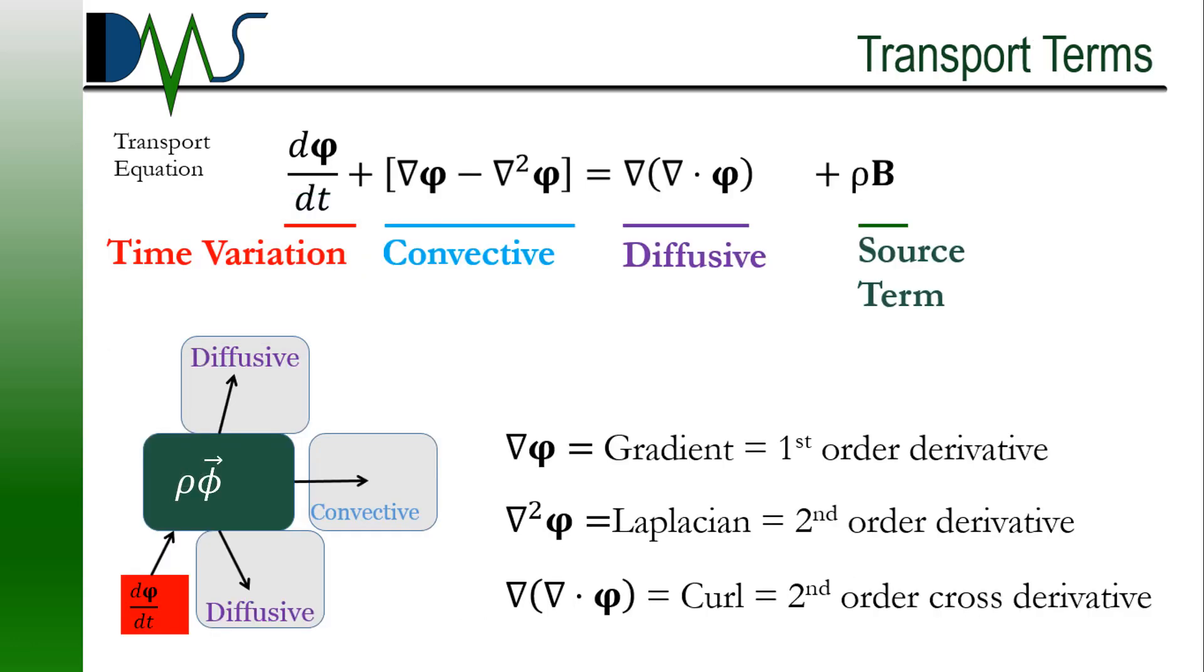First off, we have the time variation component. So that's exactly what it sounds like - it's whatever the variable does changing in time. That's our fourth dimension. Next, we have the convective terms. The nabla phi, that's our gradient term, that's our first order derivative. Please note I'm using vector notation here for my calculus. And then the second part in there, that is the Laplacian term, that's my second order derivative.